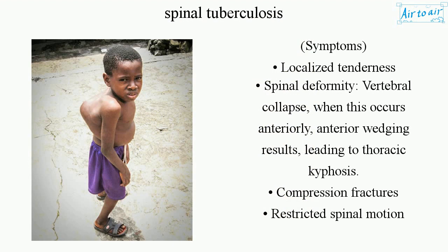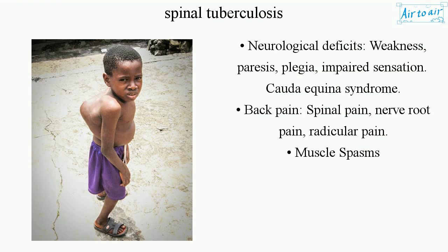When vertebral collapse occurs anteriorly, anterior wedging results, leading to thoracic kyphosis, compression fractures, and restricted spinal motion. Neurological deficits include weakness, paresis, plegia, and impaired sensation. Other symptoms include cauda equina syndrome, back pain, spinal pain, nerve root pain, radicular pain, and muscle spasms.